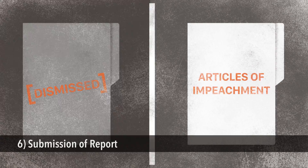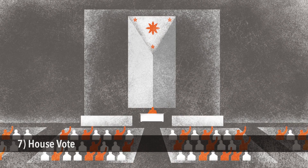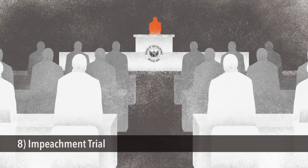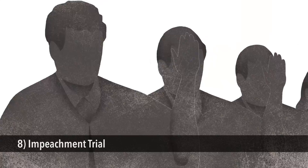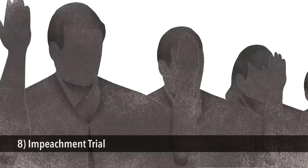Otherwise, the Justice Committee would set the articles of impeachment. The House then votes on the complaint. At least one-third of all House members is needed to endorse the complaint to the Senate. A full-blown trial begins, with the Senate sitting as an impeachment court. At least a two-thirds vote of Senate members is needed to convict an official, according to the Articles of Impeachment. The impeached official is then removed from office.